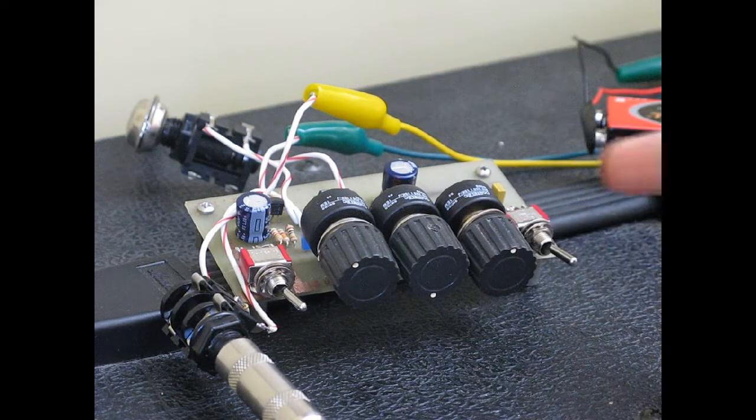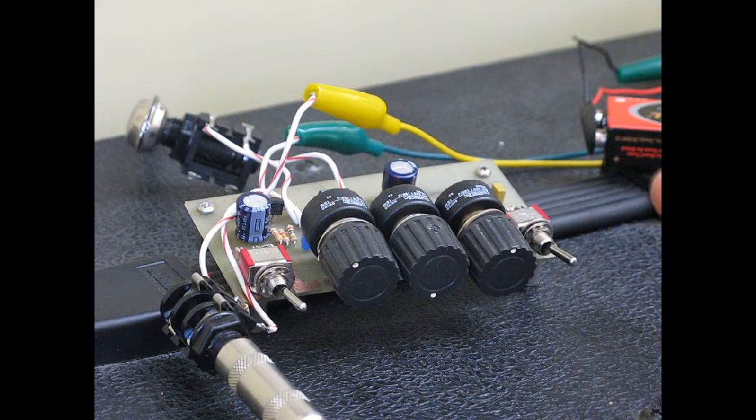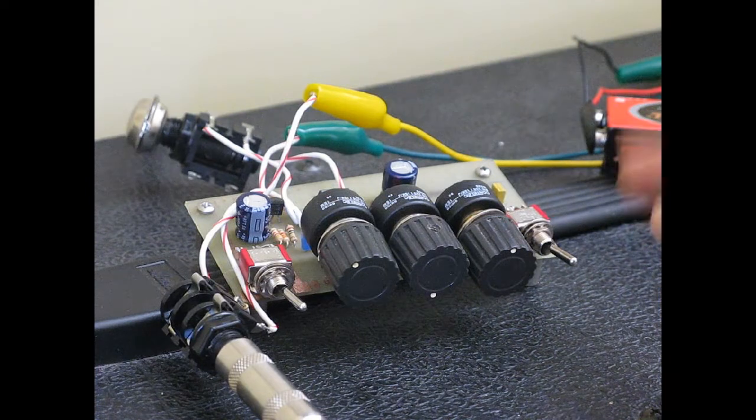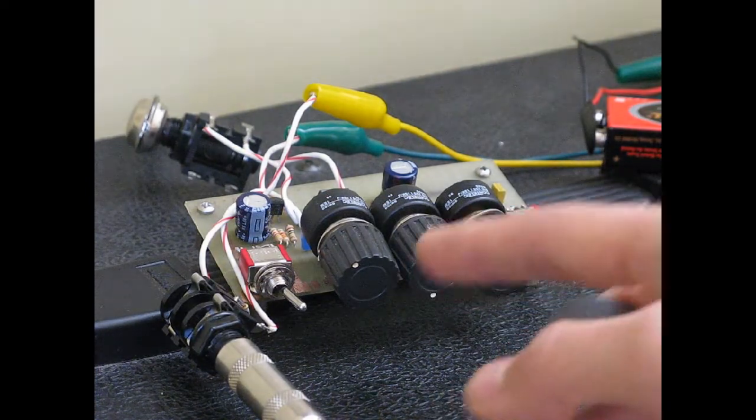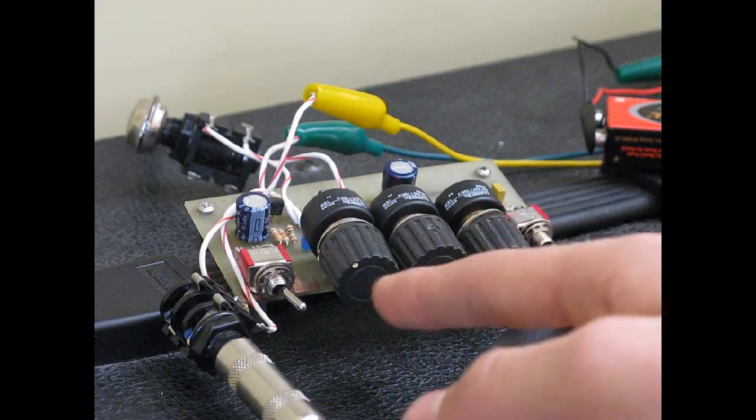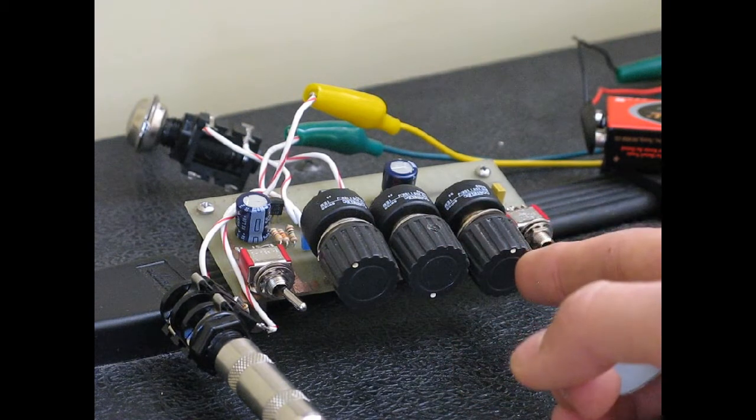It shorts pins one and eight of the op-amp chip to give you, I believe, a gain of 200 instead of 20. And from left to right here, the knobs are volume, tone, and gain.